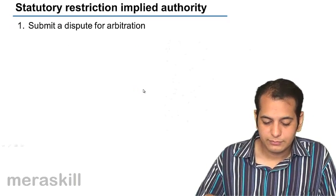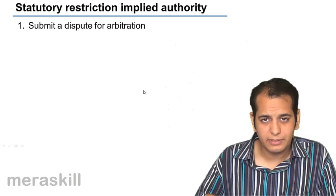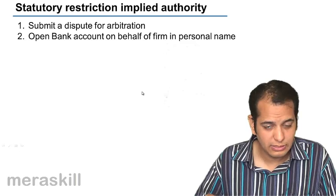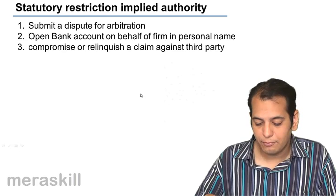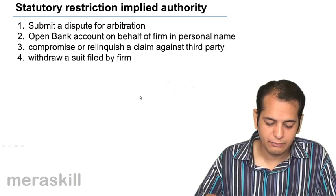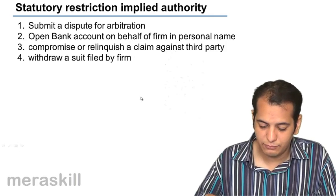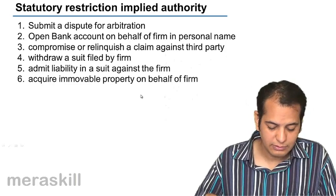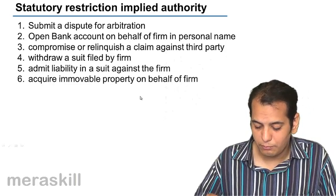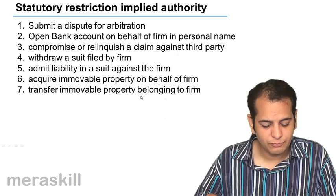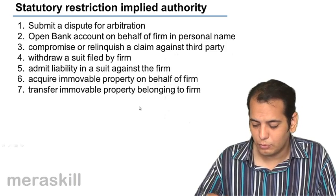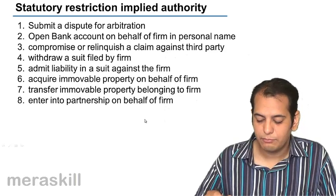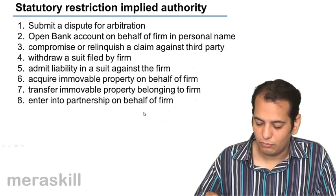The eight statutory restrictions are: first, submit a dispute for arbitration; second, open a bank account on behalf of the firm in a personal name; third, compromise or relinquish a claim against a third party; fourth, withdraw a suit filed by the firm; fifth, admit liability in a suit against the firm; sixth, acquire immovable property on behalf of the firm; seventh, transfer immovable property belonging to the firm; and eighth, enter into partnership on behalf of the firm.